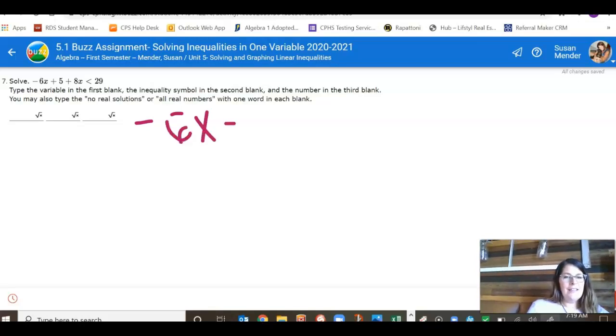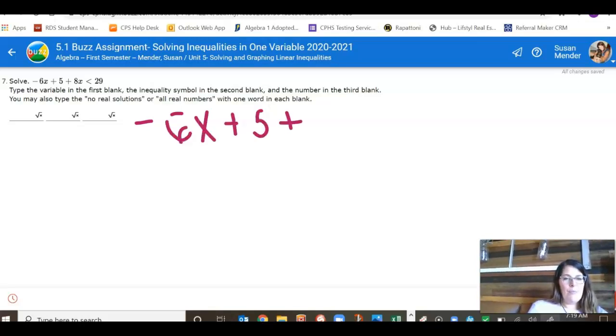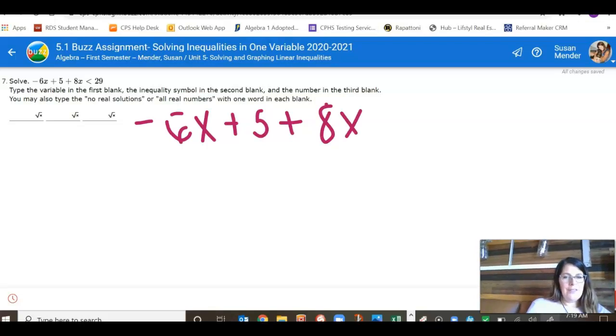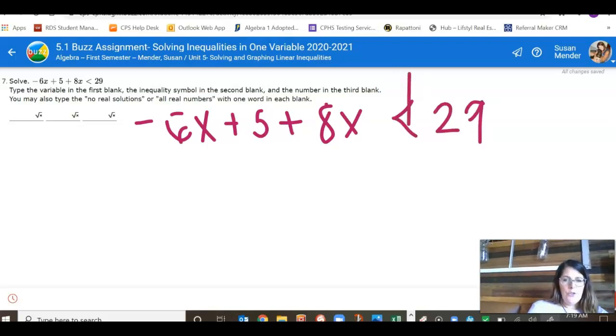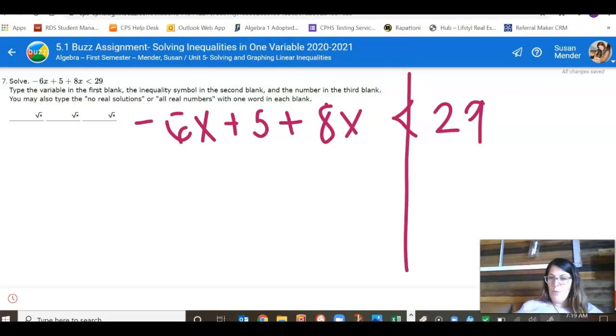You've got negative 6x plus 5 plus 8x all on one side and less than 29 on the other. So I like to draw this line at the inequality. On the left-hand side, I need to combine my like terms.